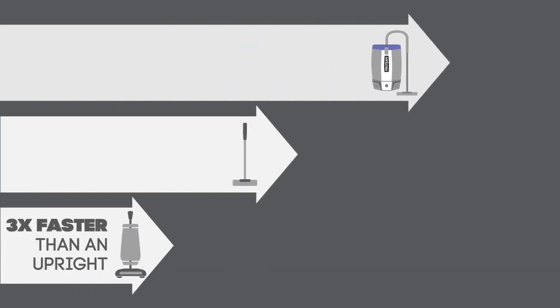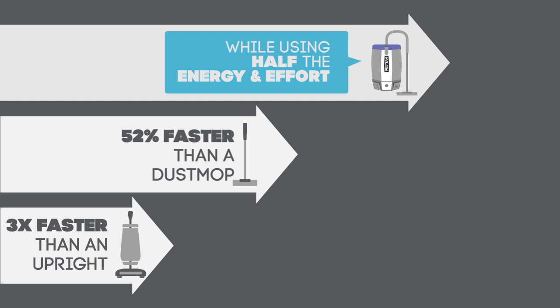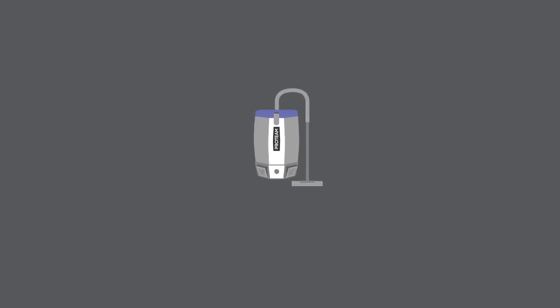The SuperCoach Pro cleans three times faster than an upright and 52% faster than a dust mop, all while using half the energy and effort to clean.